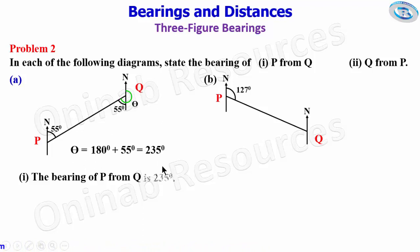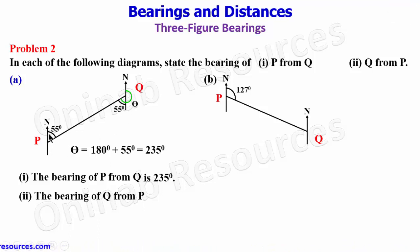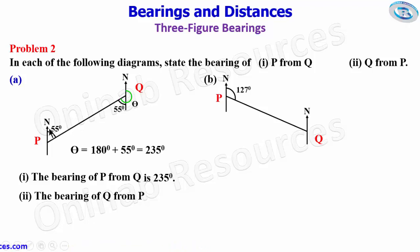Theta gives 235 degrees, so the bearing of P from Q is 235 degrees. That's the first part of 2a. The second part says the bearing of Q from P. To get the bearing of Q from P, we move from the north and go clockwise until we get to the line joining P and Q, and that angle is 55 degrees. Since 55 degrees is just two digits, we add zero before it, so the bearing of Q from P is 055 degrees.